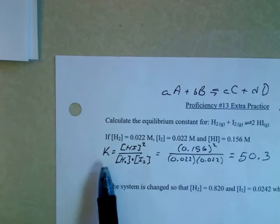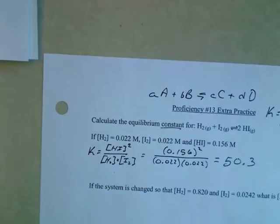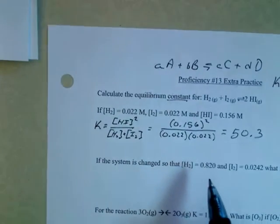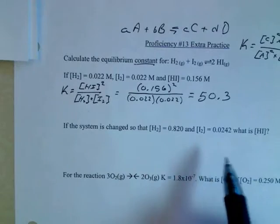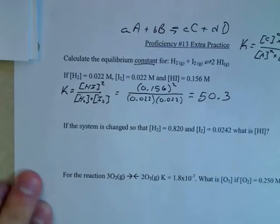Now this K is called the equilibrium constant for a reason, right? It's constant. It's the same. So you have the same system. If you add more stuff to it, like it says in this next problem, your K is still the exact same thing.